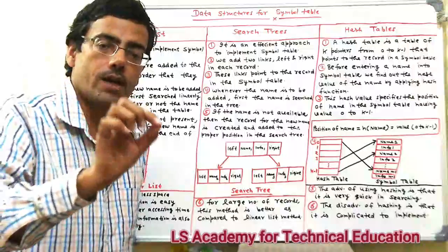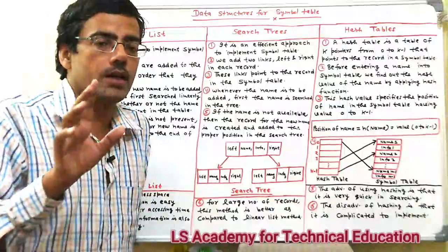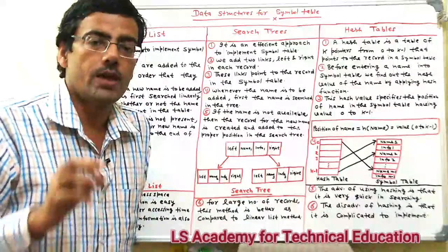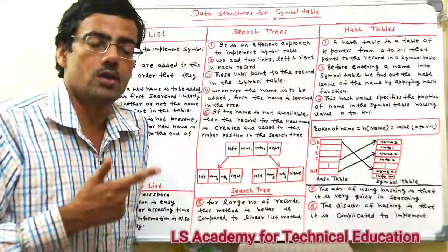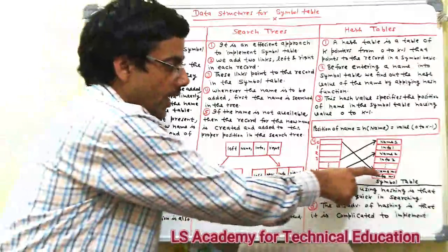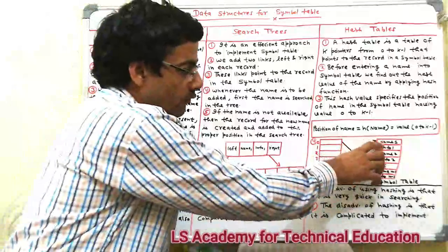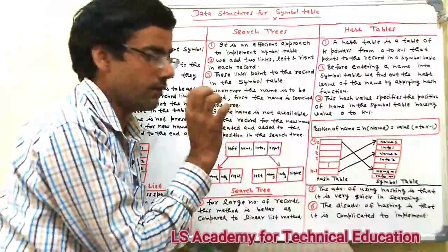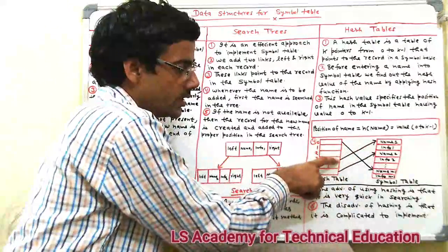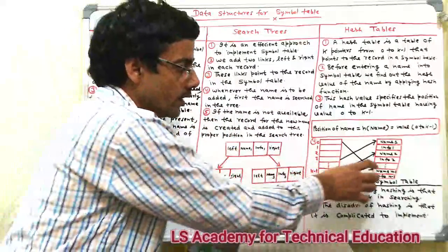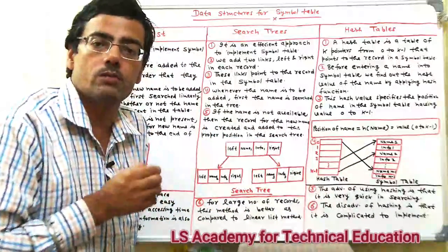For example, if you insert a name, the hash function gives you a position number — say position number 5 — meaning that variable will be saved at that position. The name is converted to an integer form, and that integer acts as an index telling us at which position the name is stored. For example, name n-1 is at position 0; name 1 gives integer value 3 meaning it's at position 3; name 2 gives value k-1 meaning it is at position k-1.